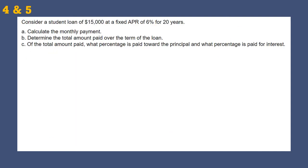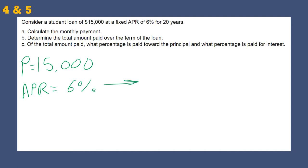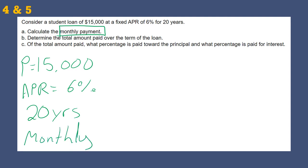Calculate the student loan of $15,000 at a fixed APR of 6% for 20 years. We start with $15,000 as our principal. We have an APR of 6% — we need to think about that in decimal terms. The time is 20 years. The first thing we're trying to solve is the monthly payment. There is an Excel formula for this — in Excel, type equals PMT because it says calculate the monthly payment.